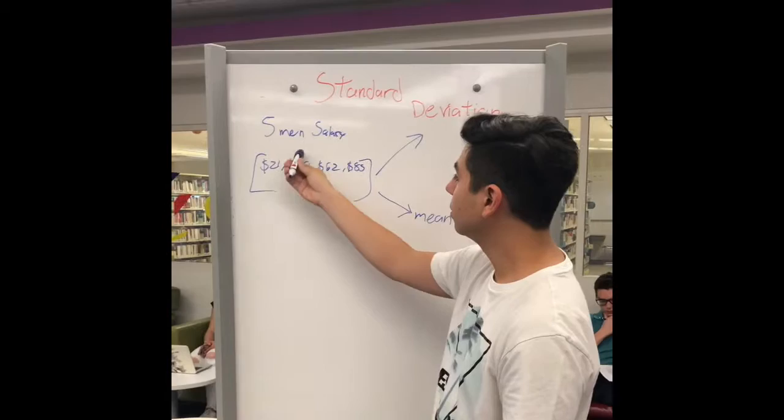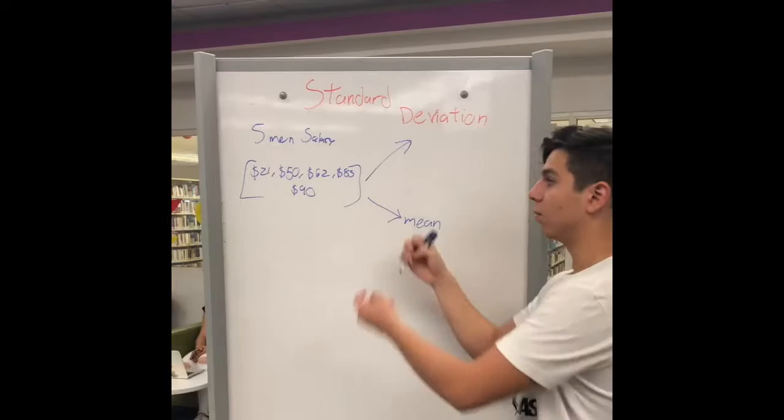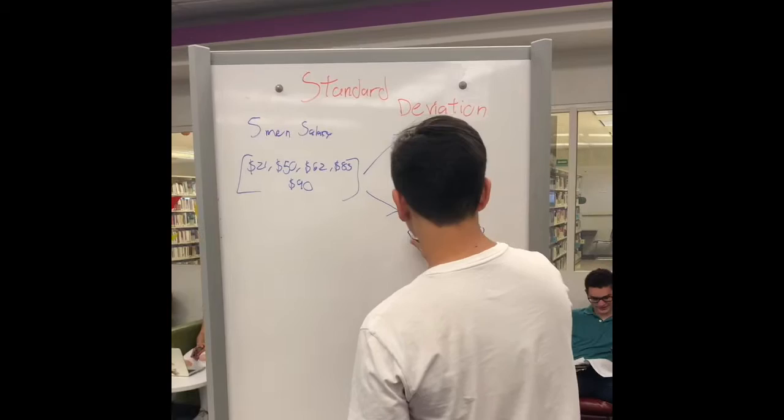A salary of five men: 21, 50, 62, 85, and 90. Well, the mean of all this set of data will be 61.60.